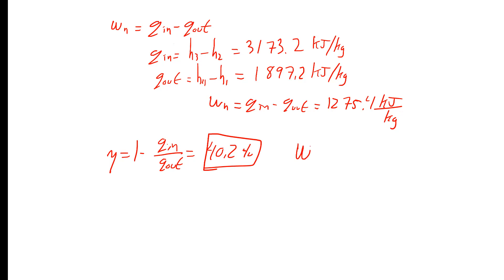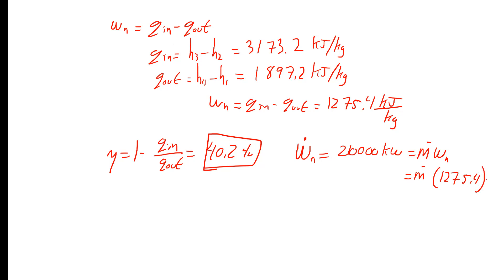For the mass flow rate, the net power output of 210 megawatts, or 210,000 kilowatts, equals the mass flow rate times the specific net work of 1275.4 kJ/kg. Solving, the mass flow rate is 164.7 kilograms per second.